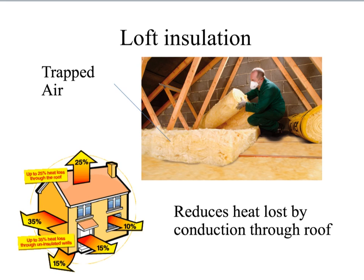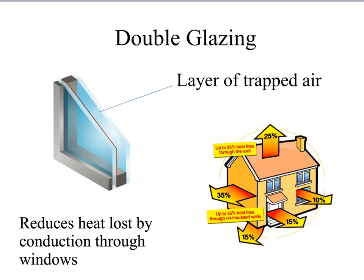Double glazing, so this is reducing the heat energy lost through the window. Again, it works by trapping a layer of air. Using double glazing reduces the heat lost through the window by conduction.